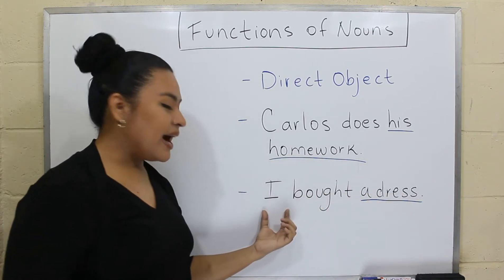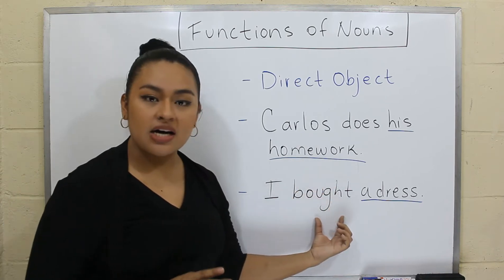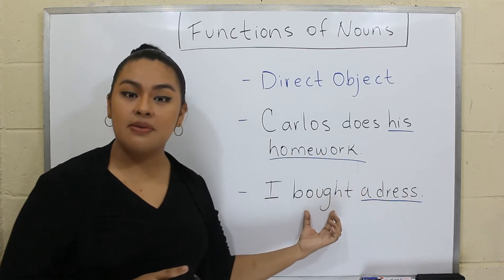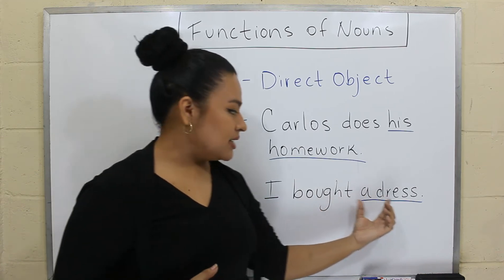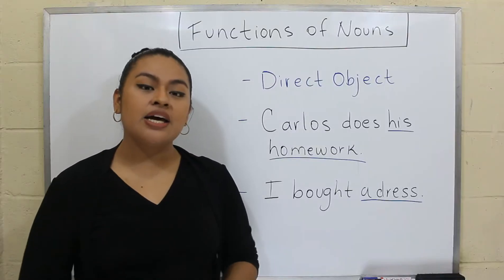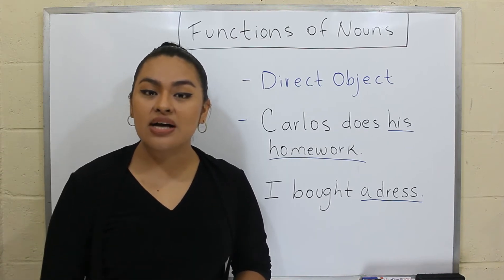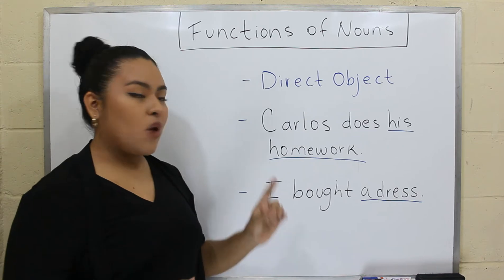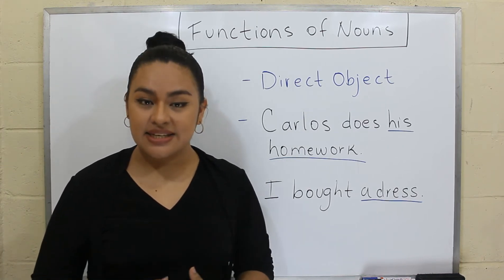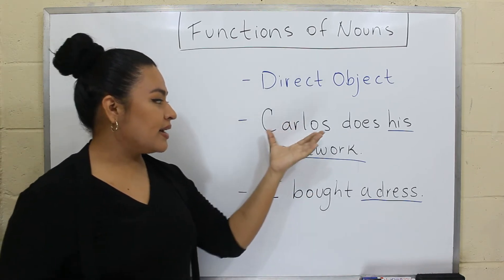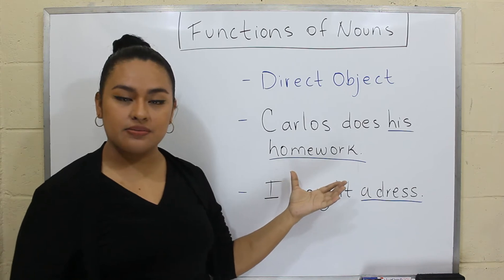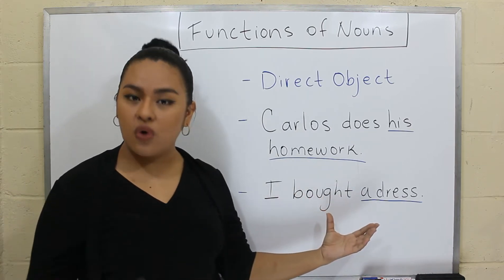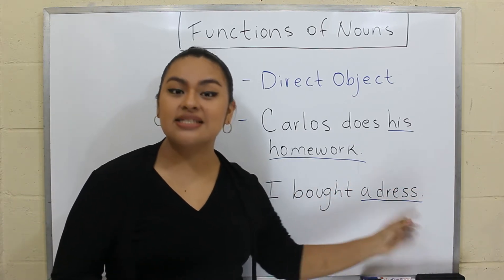In the next example: I bought a dress. I is the subject of the sentence and bought is the verb. So then we have the direct object, or the receiver of the main action — a dress. Typically, to find the direct object in a sentence, we ask the question what or who after the main verb. Carlos does what? His homework. So his homework is the direct object. And in the next one, I bought what? A dress. So a dress is the direct object.